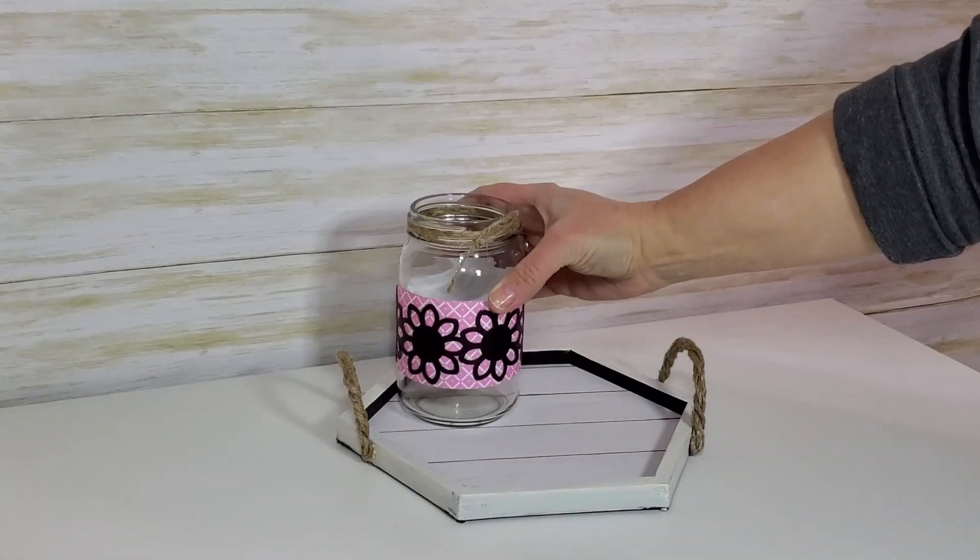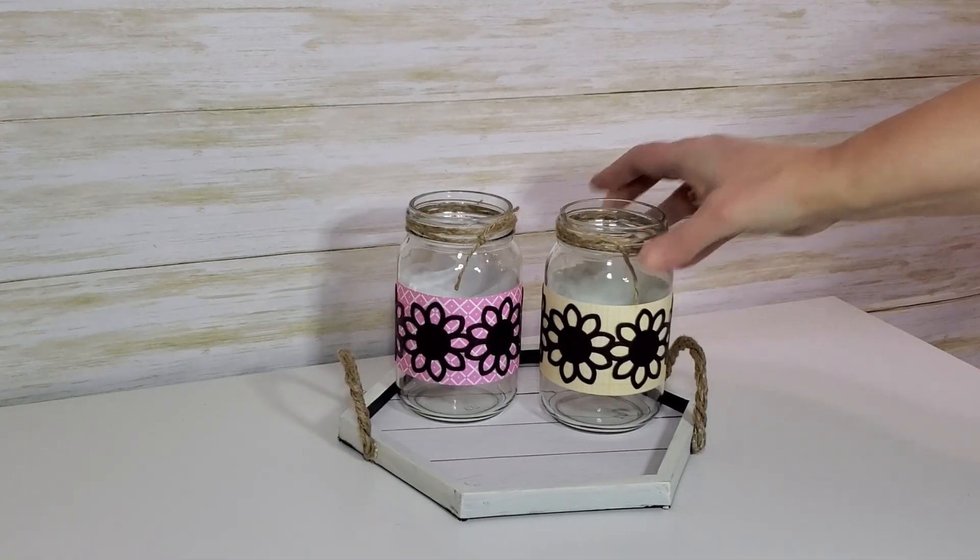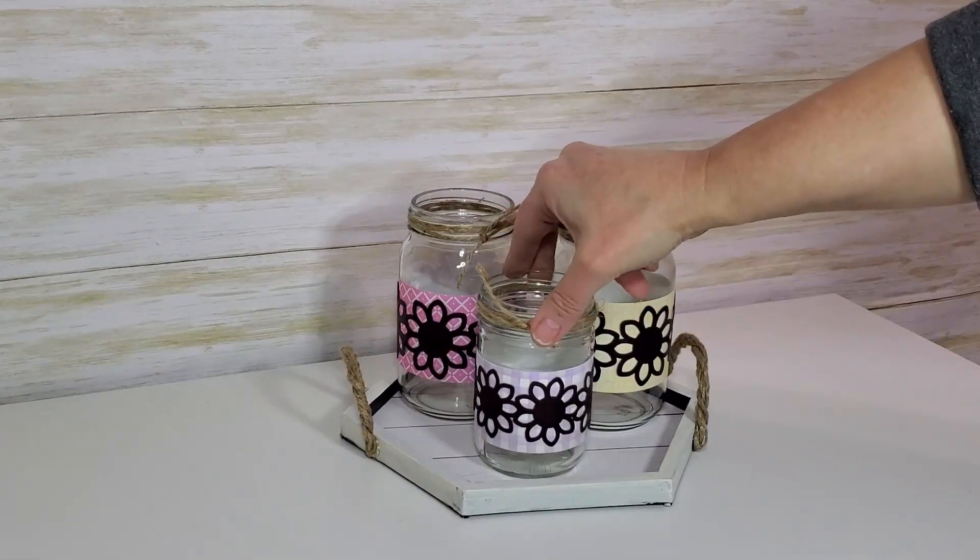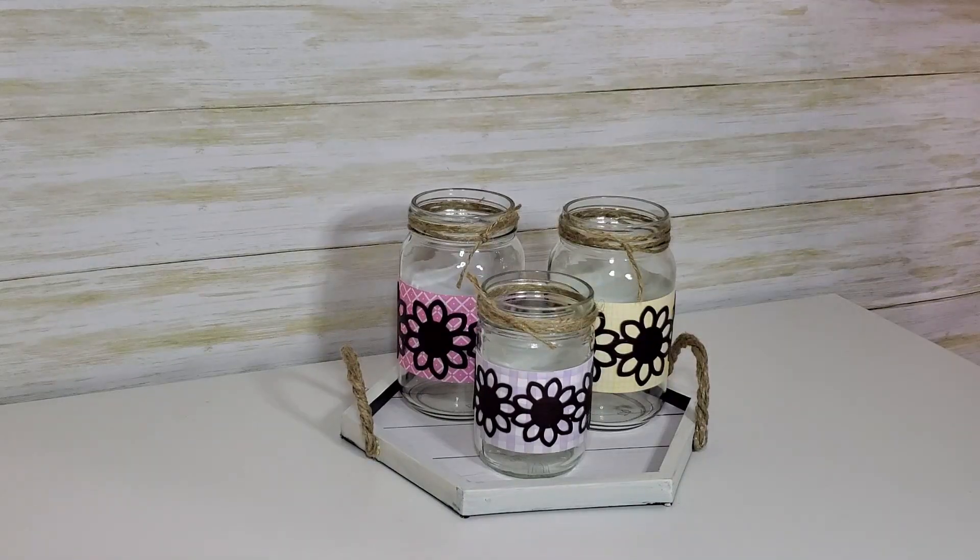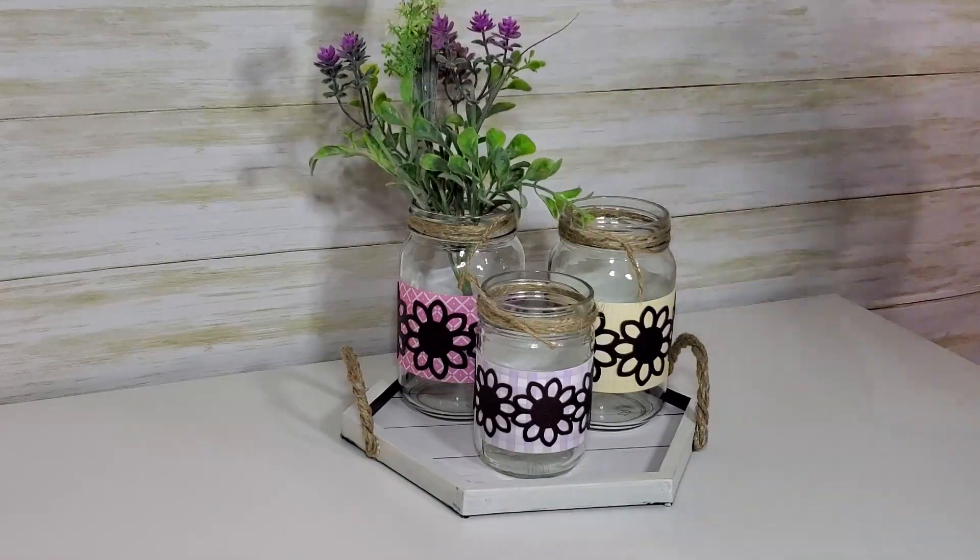Then I set my vases on the little tray and then I am going to add some florals to them. But I just really love the contrast of that dark leather against those pastels around the vases. I just think that is so pretty.